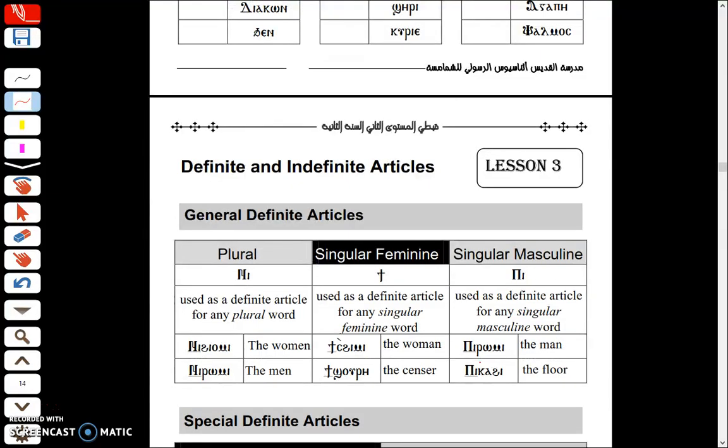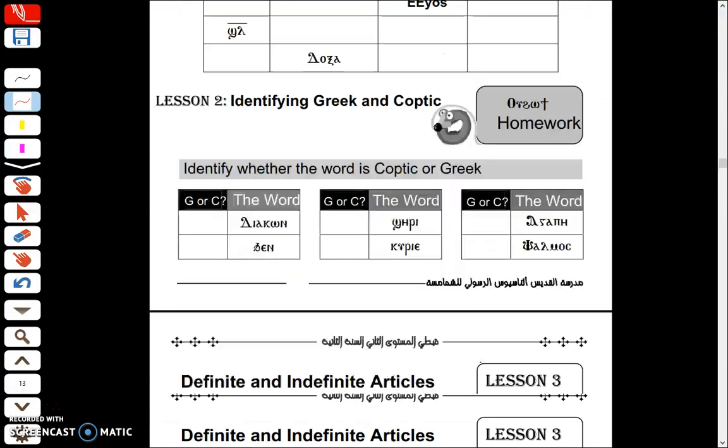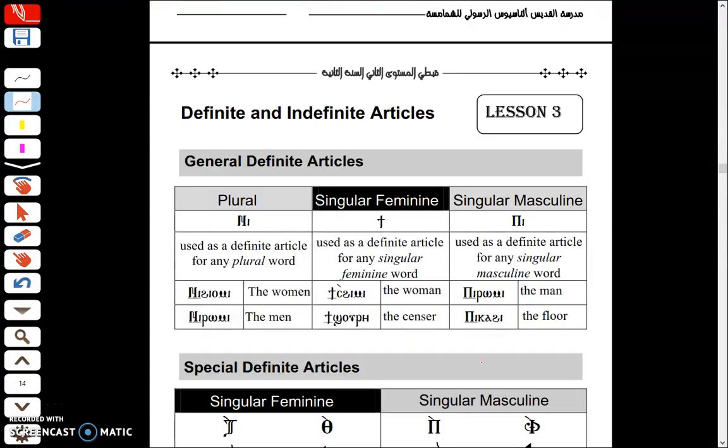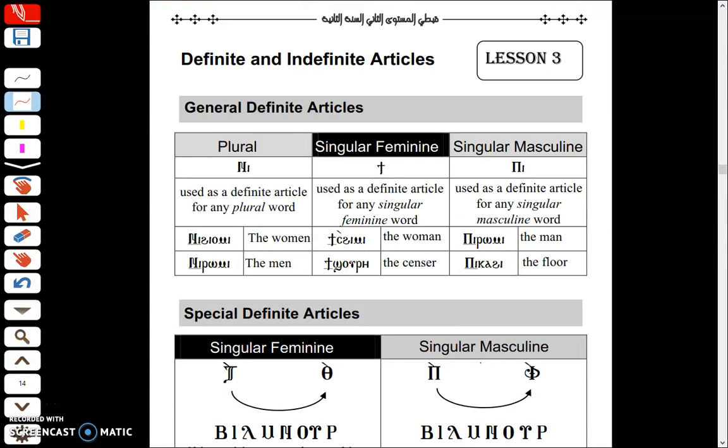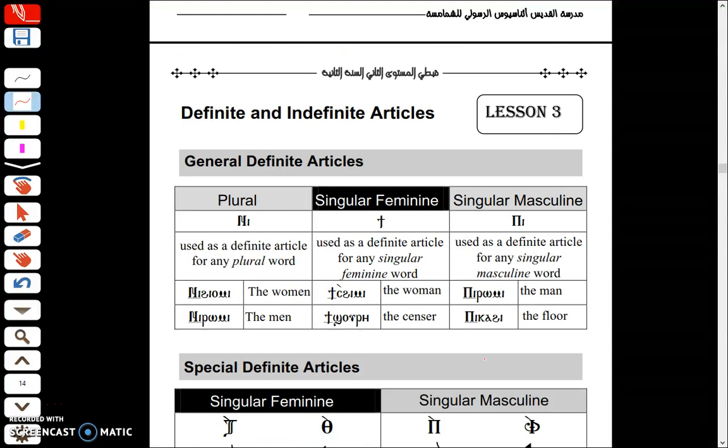And here it's followed by some homework. In the next lesson we'll be going over the definite and indefinite articles. Now you can actually look over words and you can tell the word is a noun for sure, not a verb, nothing else.